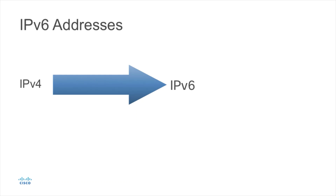There are so many devices that have IP version 4 built into their protocol stack that it was easier to find workarounds to extend the life of IP version 4 — things like network address translation, DHCP, and so on — that we really didn't have to move to IPv6 quickly. We've had many, many years to perform a migration to IP version 6.